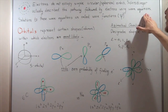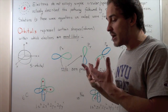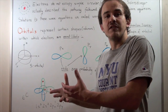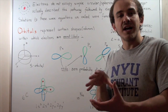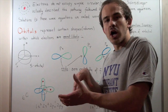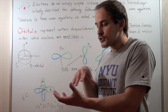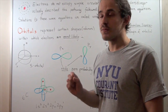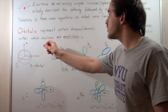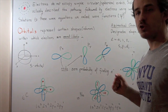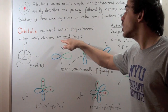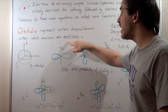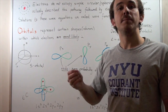Since wave equations are simply mathematical representations of the pathways that electrons take, if we solve these wave equations, we can find the probability of an electron being at a certain region, in a certain volume. These probabilities are given by orbitals. So, orbitals represent certain shapes or volumes within which our electrons are most likely found. The reason we say 'most likely' is because orbitals are probabilities.